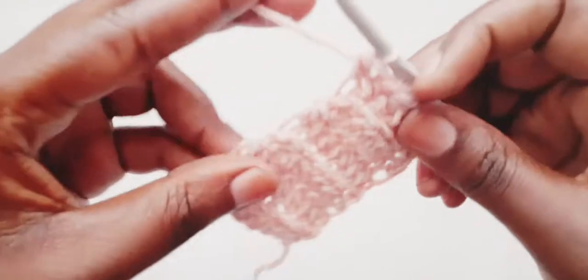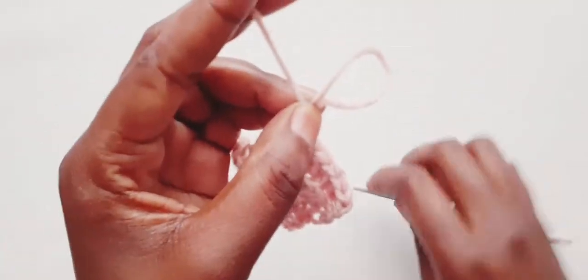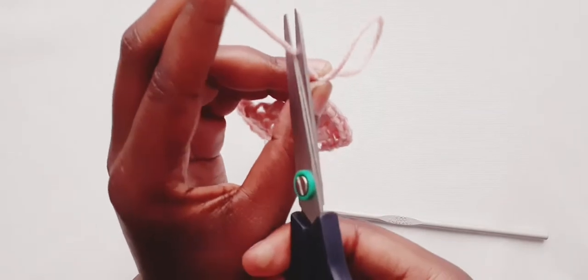So I've reached the end of row six. Here we just chain one and we cut off here. Leave a tail that is long enough to weave in later.